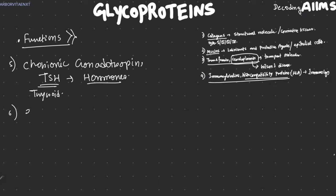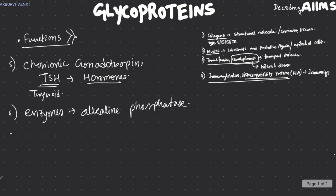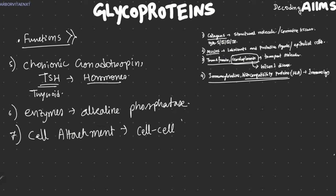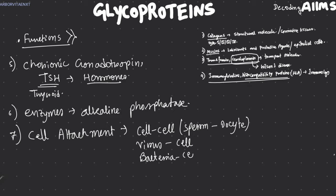There are various enzyme proteins like alkaline phosphatase. There are also various proteins responsible for cell attachment and cellular recognition sites — these are glycoproteins responsible for sperm-to-oocyte fusion, virus-to-cell attachment, bacteria-to-cell attachment, and hormone molecules binding with their receptors.